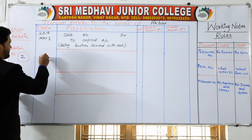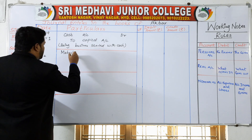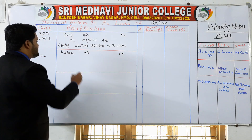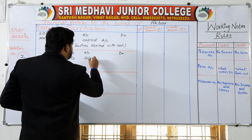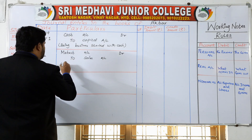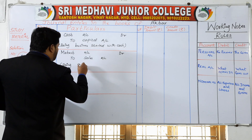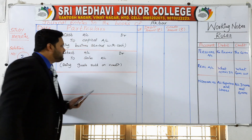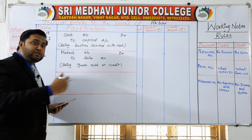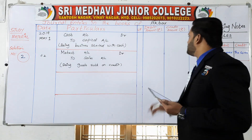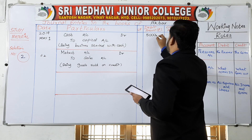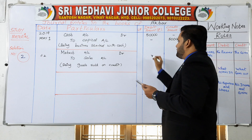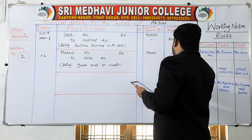Date 2nd: Mahesh account debit. Then who is going to be credited? Sales account — to sales account. Write the narration: 'Being goods sold on credit.' We have not yet received cash, that is why the goods are given on credit. The amount for the first entry is 50,000 — 50,000 debit and 50,000 credit. For the sales entry, the amount is 35,000 — 35,000 in the debit side.